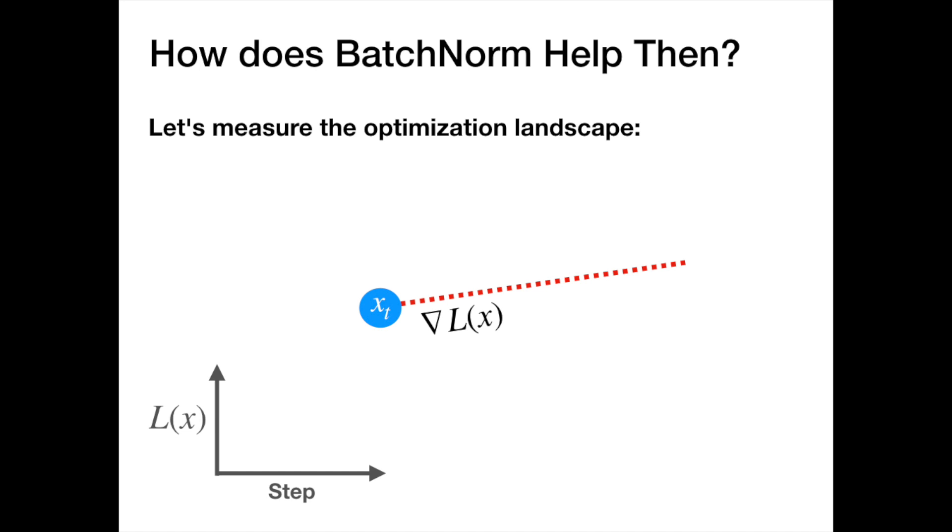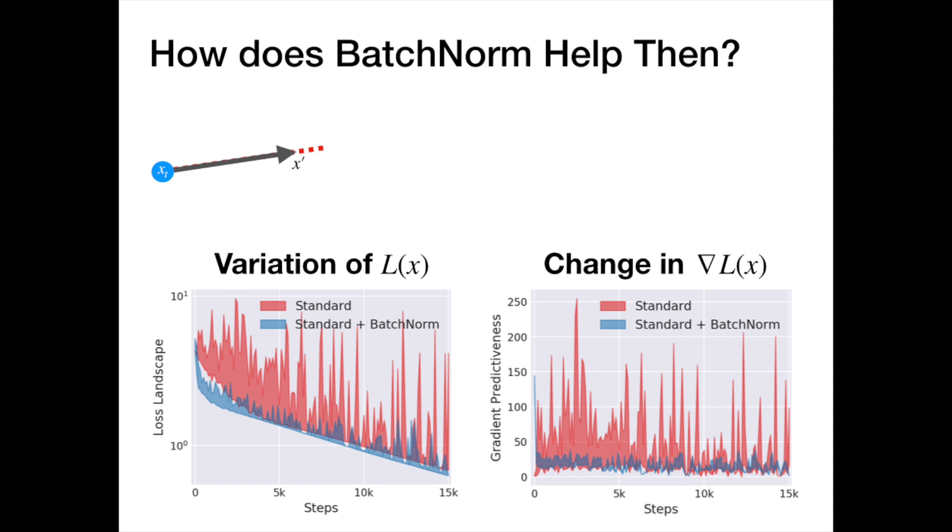In our experiments, we consider moving along this direction and we look at the variation in loss and in the gradients themselves as we vary the step size. We find that in all of these aspects, batch norm seems to have a really significant effect on the optimization landscape.